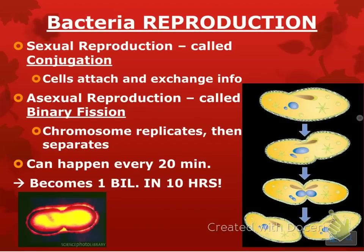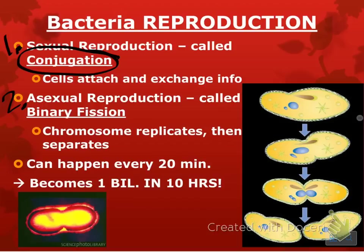Reproduction: there are two ways bacteria can reproduce — sexually and asexually. Sexual reproduction is called conjugation. Basically, they attach, exchange genetic information, and then re-divide — it's not quite like sexual reproduction in other animal species. Asexual reproduction is binary fission: it just replicates like a normal cell would and then separates. This can happen every 20 minutes, which is why it's so common for scientists to use bacteria.